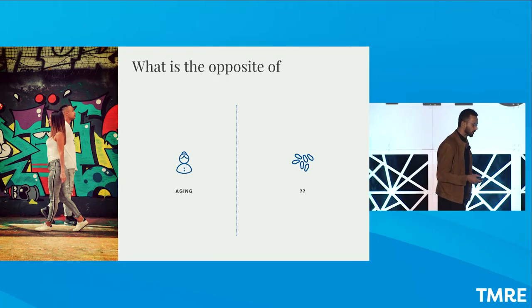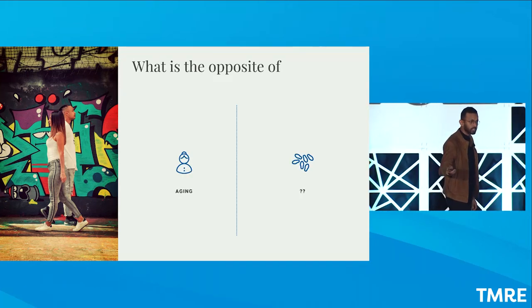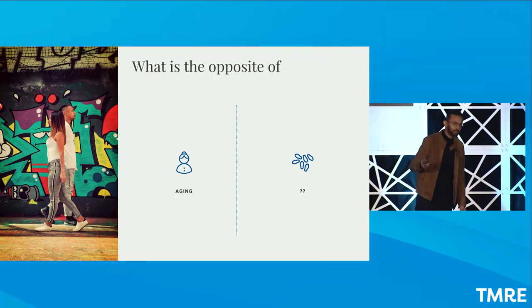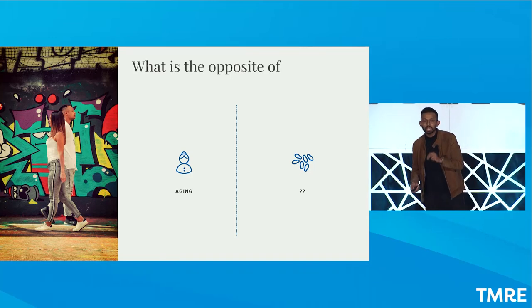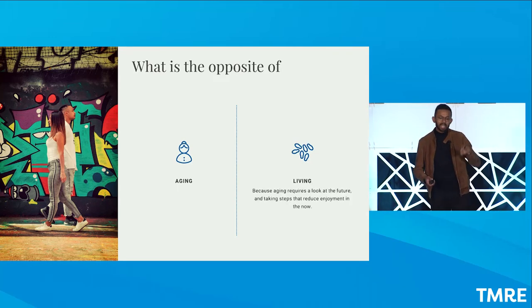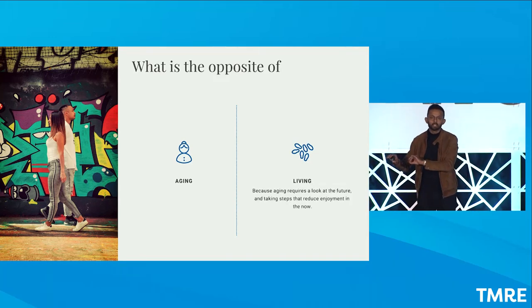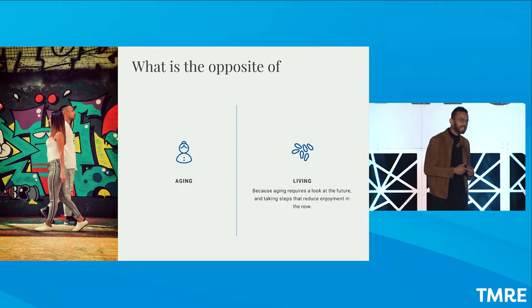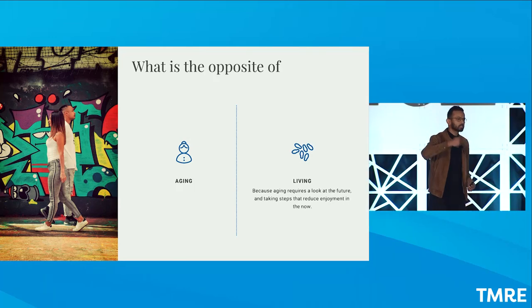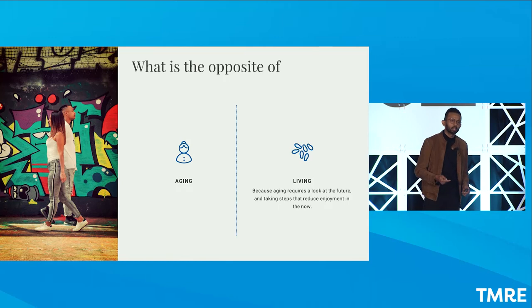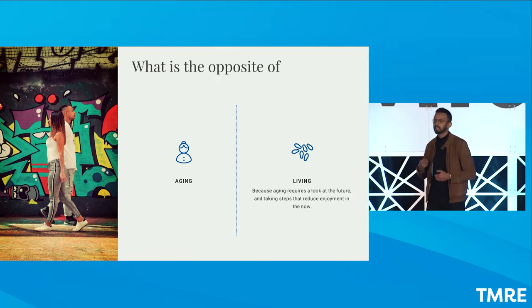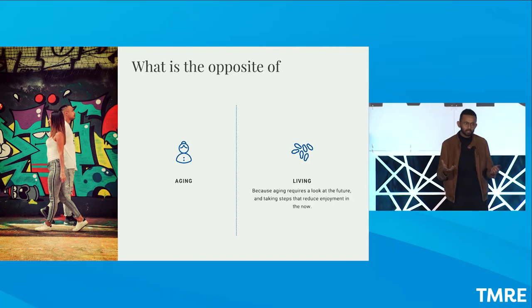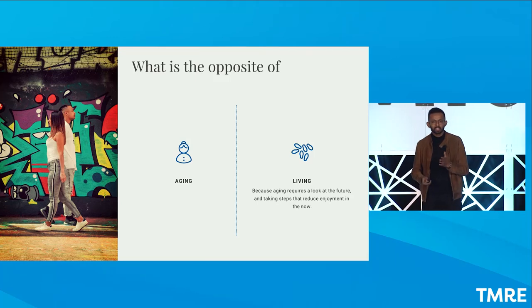So let's do another one, aging. I posted this one on LinkedIn too. Everybody said youthfulness. It's not the opposite of aging. Again, it's because of what aging means in culture today. The opposite of aging is living. Why is that the case? Because aging requires us to constantly think about the future. It requires us to take ourselves out of the present moment. It requires us to stop living our lives in the present moment, living in the moment. So the opposite of aging is living.